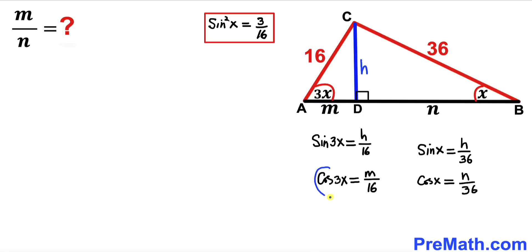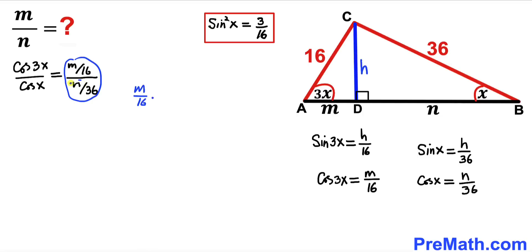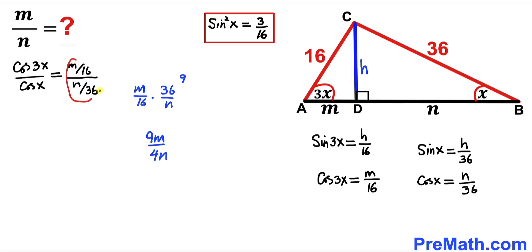Now let's find the ratio of cosine of 3x to cosine of x. Cosine of 3x divided by cosine of x equals (m/16) divided by (n/36), which simplifies to m/16 times 36/n. Reducing 36 and 16 gives 9 and 4, so this becomes 9m divided by 4n.